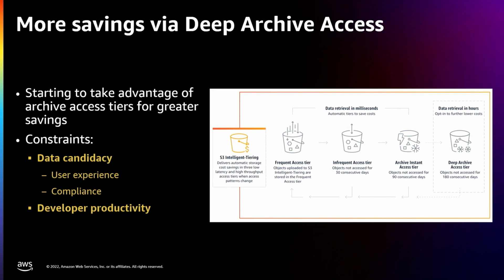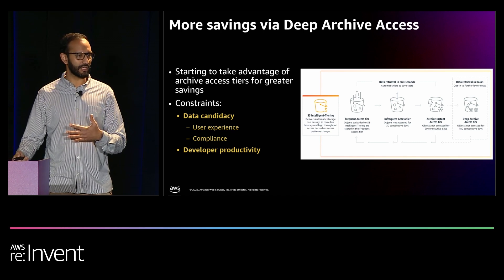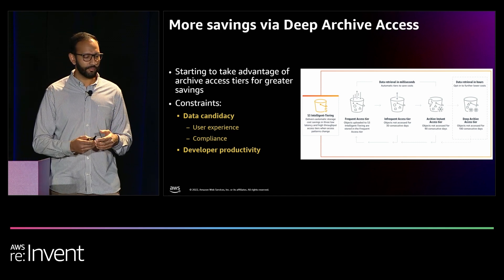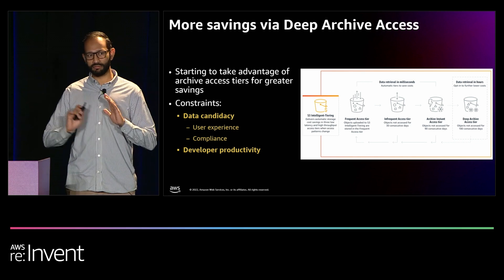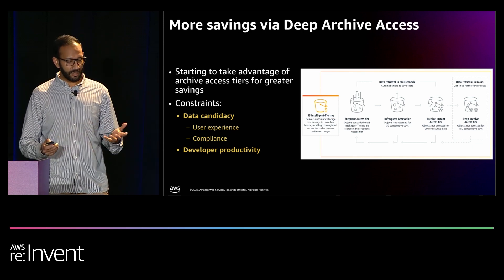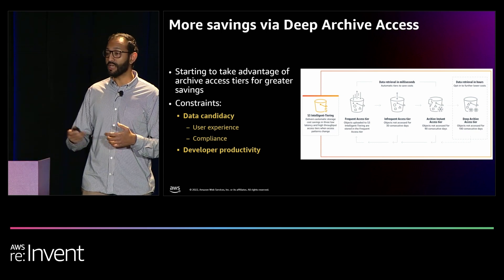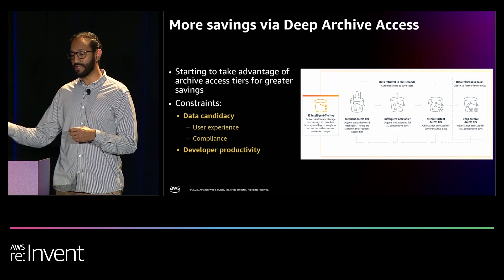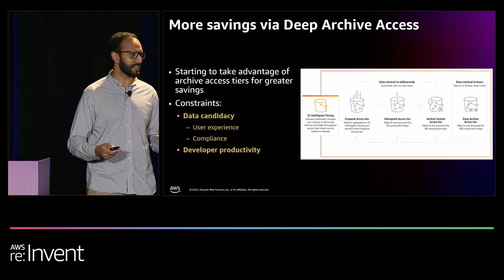We needed to figure out how to actually move data into deep archive access — what data can we move. We have a data candidacy constraint. Anything that our users might rely on to retrieve instantly, we don't want to degrade the user experience, so we won't move that data into deep archive access — we'll keep it in a hotter tier. Being a payments company, we also have a lot of compliance obligations, so we don't want to touch any data that would change any of those processes. Additionally, with hundreds of petabytes of data, we want to uphold developer productivity as well.